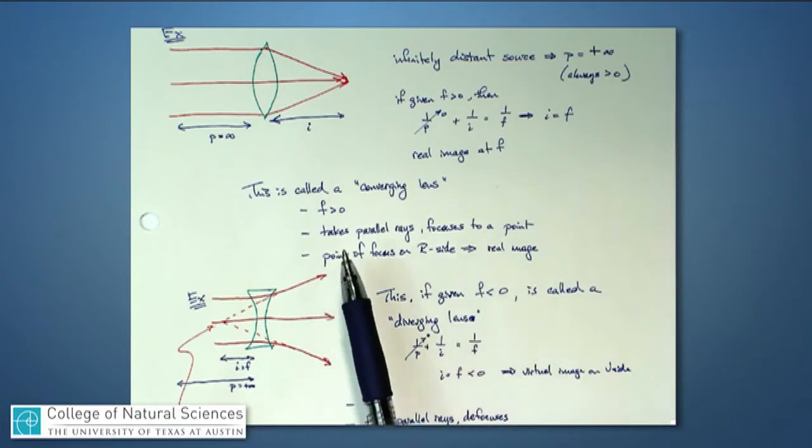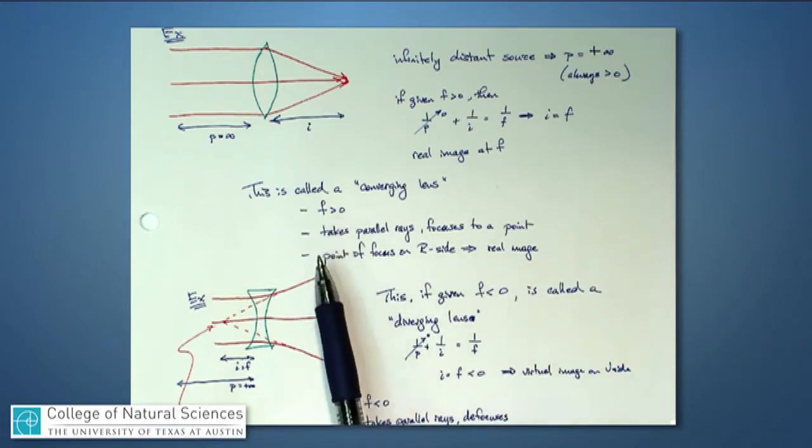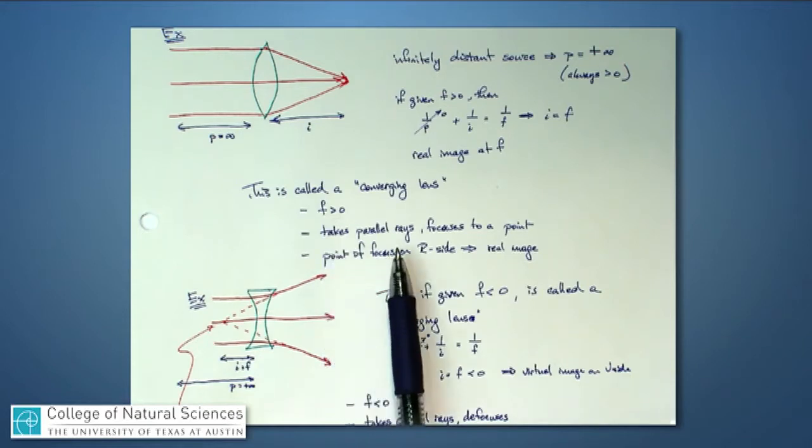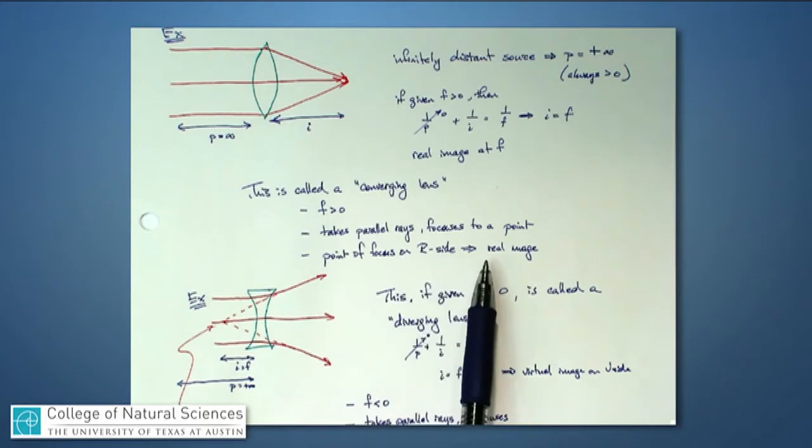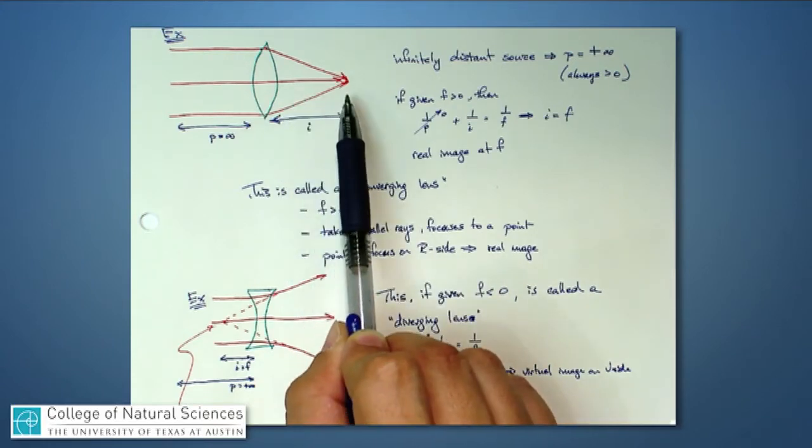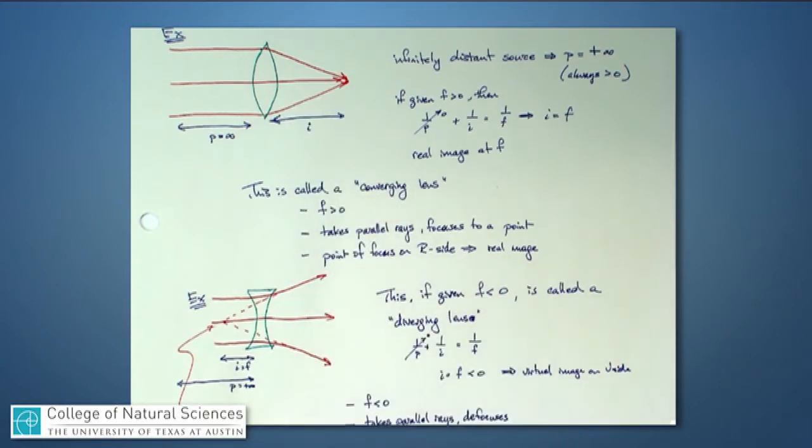So we should take away that for a converging lens, F is always a positive number. It will bring parallel rays to an actual point of focus and it does so on the real side. It's a real image. Real image is being defined as one where light rays actually come together. You could burn something with that image. Or you could take a leaf and put it at the focal point and actually burn the leaf.